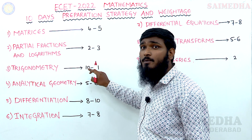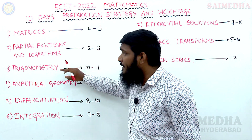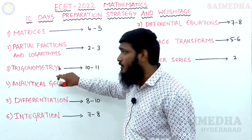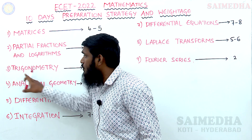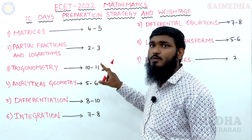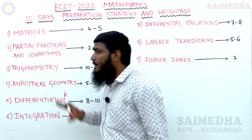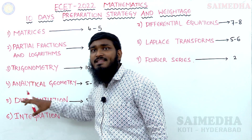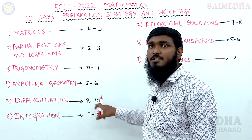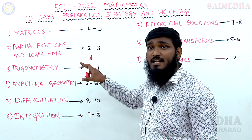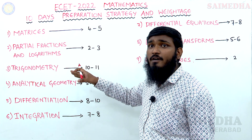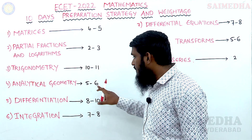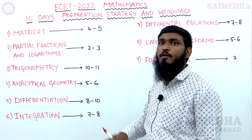Next is Trigonometry — this covers trigonometric functions, compound angles, multiples and submultiples, transformations, inverse trigonometry, and complex numbers. From this topic you can score a minimum of 10 marks and a maximum of 11 marks. After that, Analytical Geometry carries 5 to 6 marks. Moving to the Calculus part: Differentiation, starting from Functions and Limits (worth 2 marks), then first-order derivative, second and higher-order derivative, partial derivative, and applications of derivatives — covering all these gives you 8 to 10 marks.